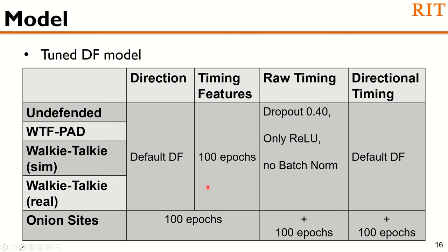Onion sites had only 77 instances for each class, so we wanted to make the model learn better, which is why we increased the number of epochs. For timing features, the number of features per instance is 160, which is way less than the default length of direction and directional timing, so again we increased the number of epochs to 100 from 30 to make the model learn better.